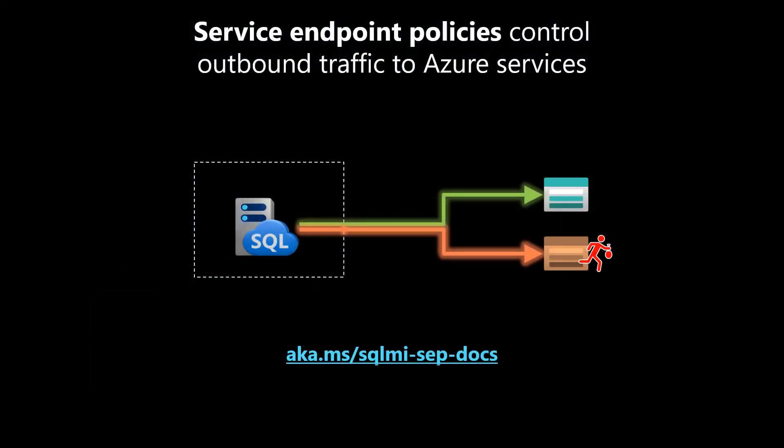Let's recap. On our managed instance's subnet, we've enabled a service endpoint, then applied a service endpoint policy to only allow outbound traffic to specific Azure storage accounts. This managed instance can't access other storage accounts, and neither can a prospective data thief nor a forgetful colleague. To learn more, visit aka.ms/sqlmi-sep-docs. Thanks for watching!